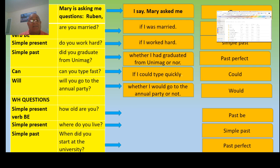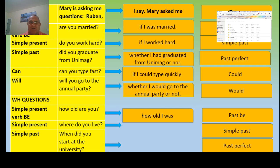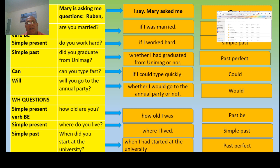Mari asked me: 'Ruben, how old are you?' → Mari asked me how old I was. 'Where do you live, Ruben?' → Mari asked me where I lived. 'When did you start at the university, Ruben?' → Mari asked me when I had started at the university.